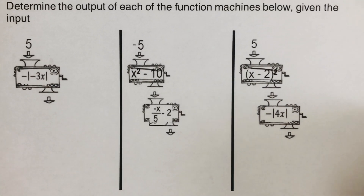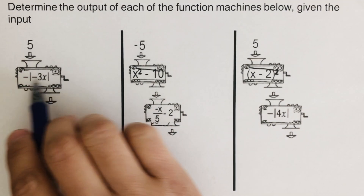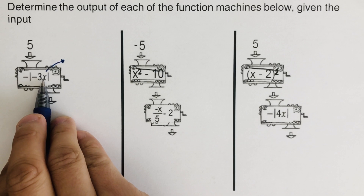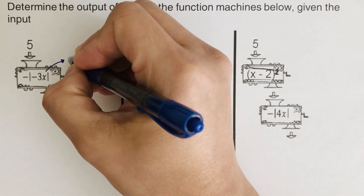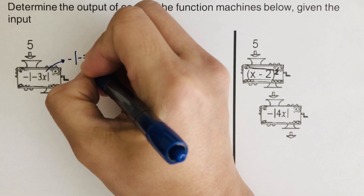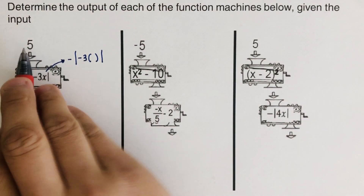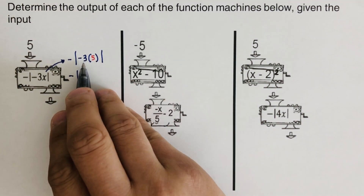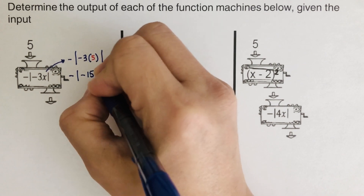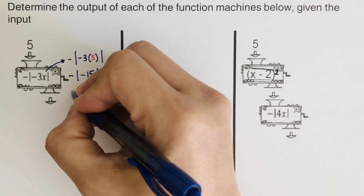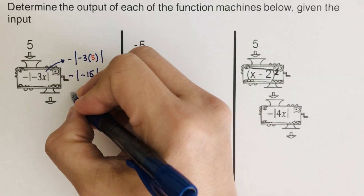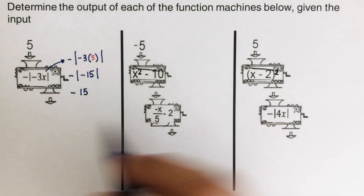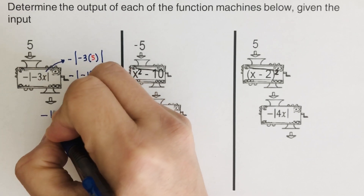Next example: we have an input of 5 going through the function machine. The trick is the same — change the variable into a parenthesis before putting in the input. This gives us negative of the absolute value of negative 3 times parenthesis, and we put in 5. So we get negative of the absolute value of negative 15. The absolute value of negative 15 is 15, but we have a negative outside, so the output is negative 15. This is a function because it produces one unique output.